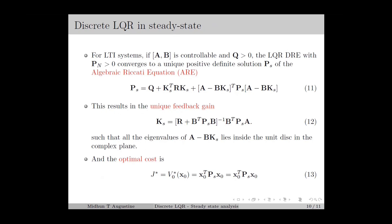Now, we have this important result: if the LTI system (A, B) is controllable and the weighting matrix Q is chosen as positive definite, then the difference Riccati equation with a terminal weighting matrix PN as positive definite converges to a unique positive definite solution Ps of the algebraic Riccati equation or ARE as given in equation number 11. This results in a unique feedback gain Ks as given in equation number 12, such that all eigenvalues of A-BKs lie inside the unit disk in the complex plane, meaning the closed loop system matrix A-BKs is stable. The steady state gain Ks is obtained by replacing pk+1 in the feedback gain equation with Ps. Similarly, the ARE is obtained from the DRE by replacing pk+1 and pk with Ps and kk with Ks. Finally, we obtain the optimal cost J* as x0 transpose Ps x0, where Ps is the steady state Riccati matrix.